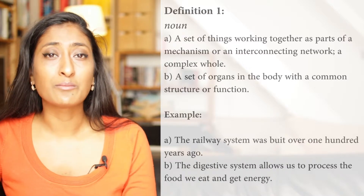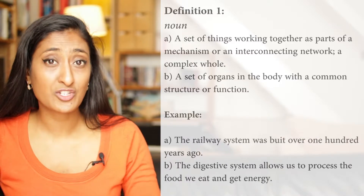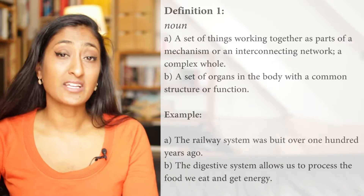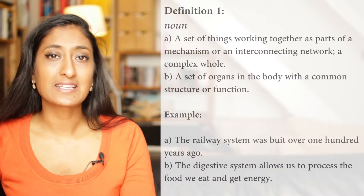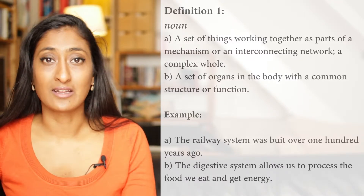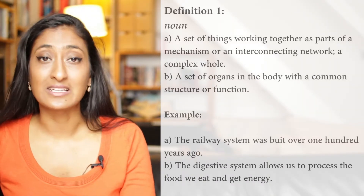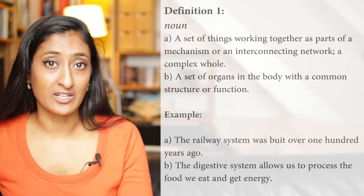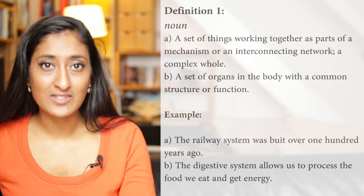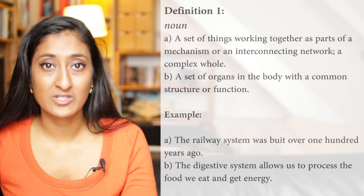Another way the word system can be used under this umbrella definition is when a set of organs in the body with a common structure or function is referred to as a system. Here's an example sentence: the digestive system allows us to process the food we eat and to get energy. The digestive system is broken up into different parts — the stomach, the intestines, and the first port of call is the mouth, including the chewing, the teeth, and everything that goes on there — all working together to process our food correctly.